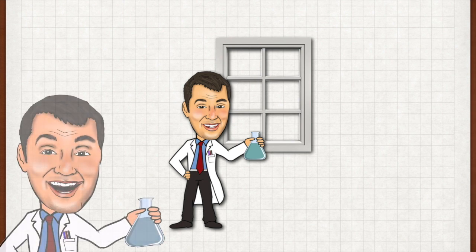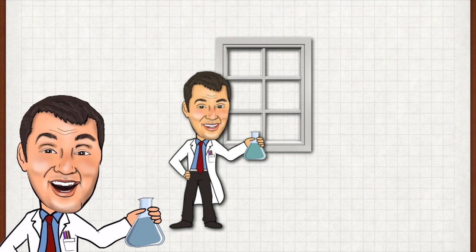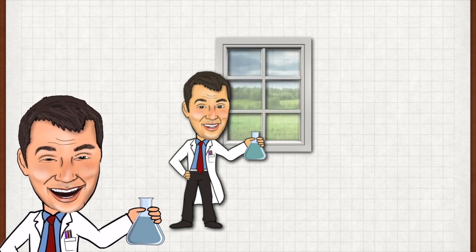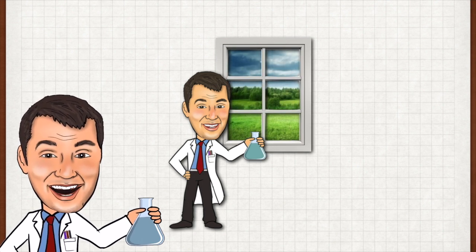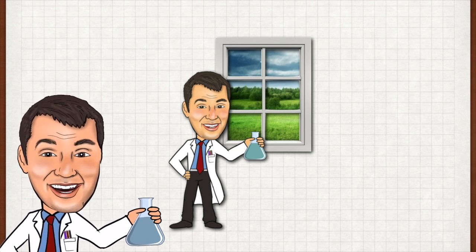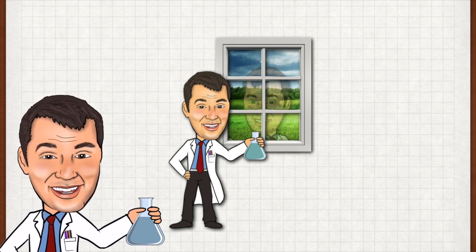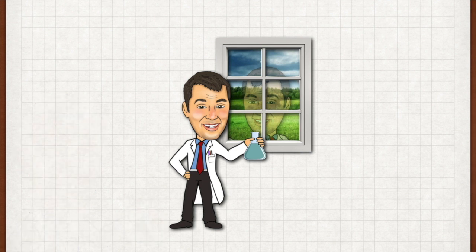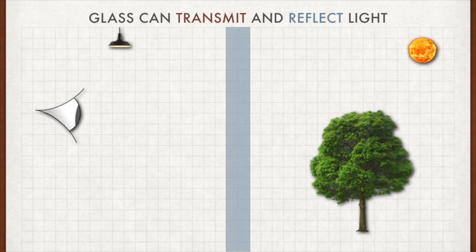So if you go to a window in your house, I'm pretty certain that you'll be able to see outside the window. But if you get really close to the window, you will also be able to see a reflection of yourself in the window. And this is because glass can transmit and reflect light.